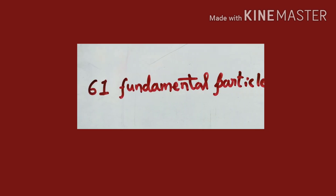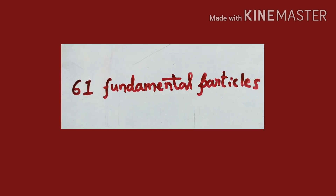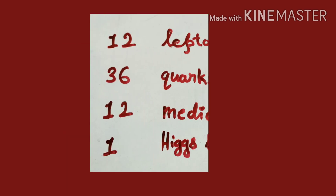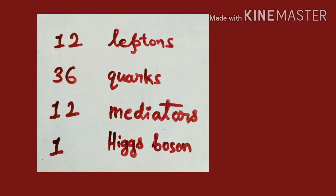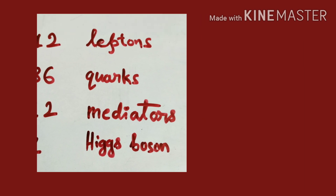Hello friends, welcome to my channel. In the last video we saw that there are 61 fundamental particles in the Standard Model of particle physics. We saw there are 12 leptons, 36 quarks, 12 mediators, and one Higgs boson. In this video we will see the characteristics of the particles and their spin.